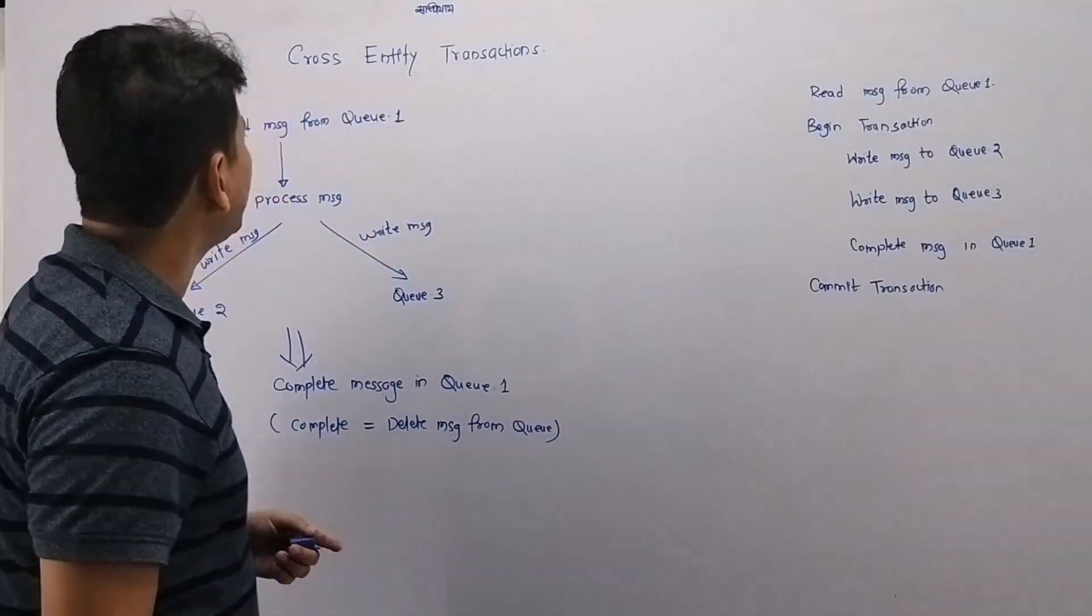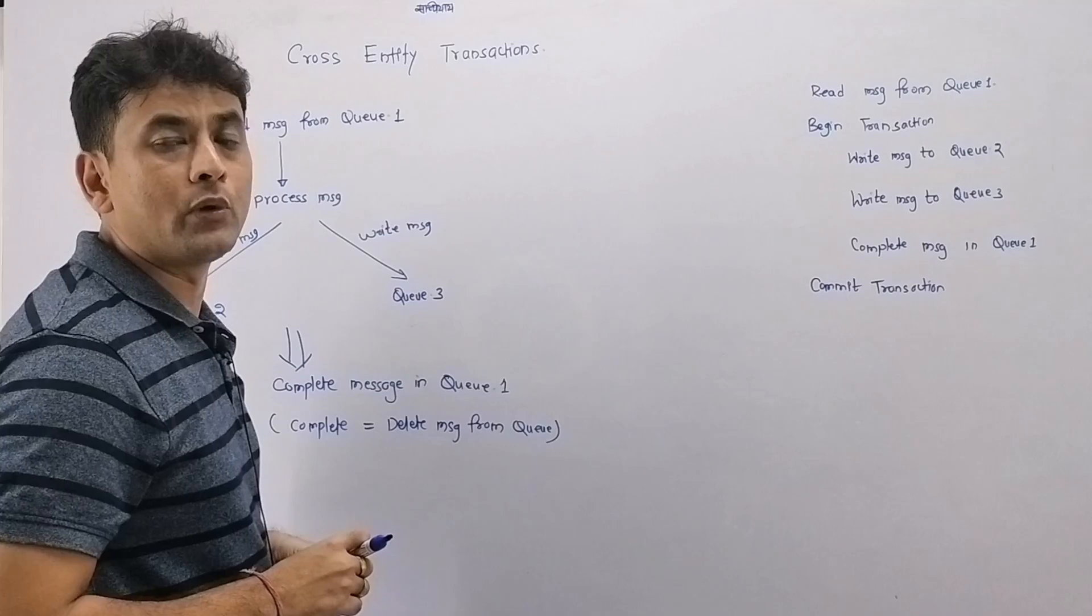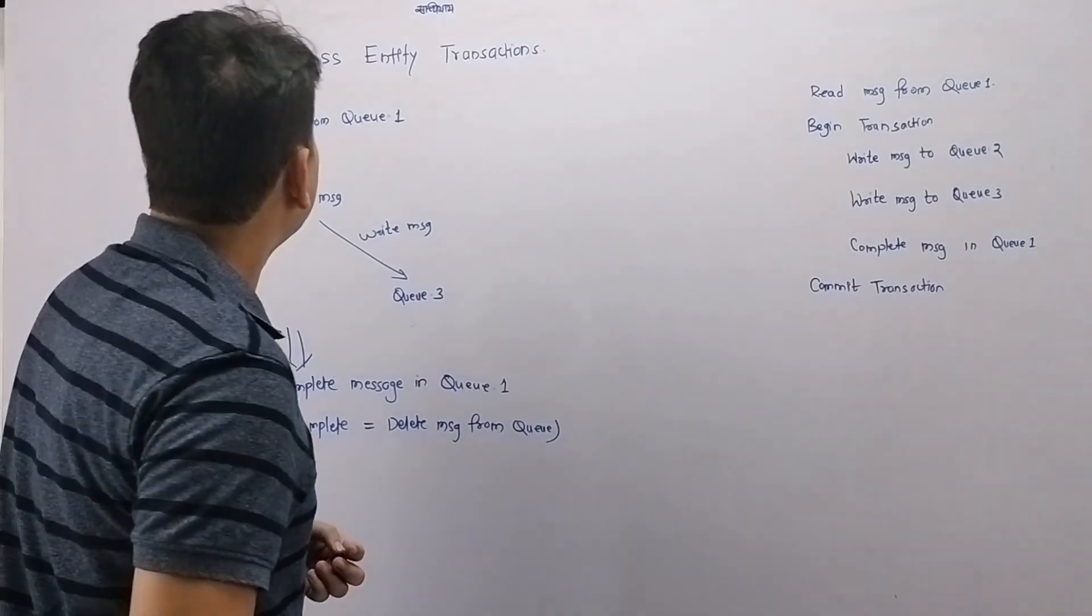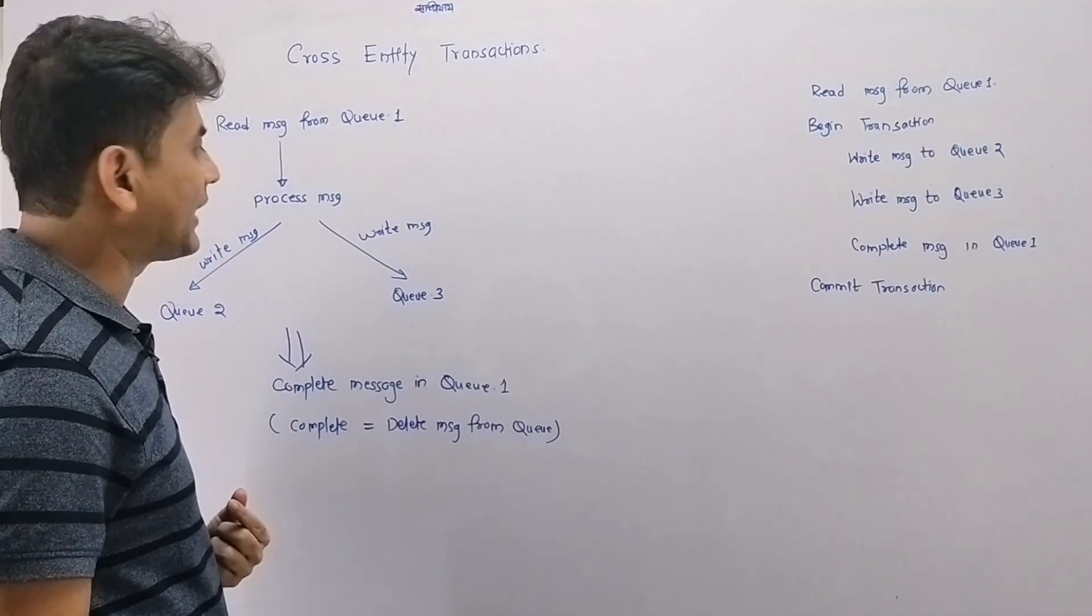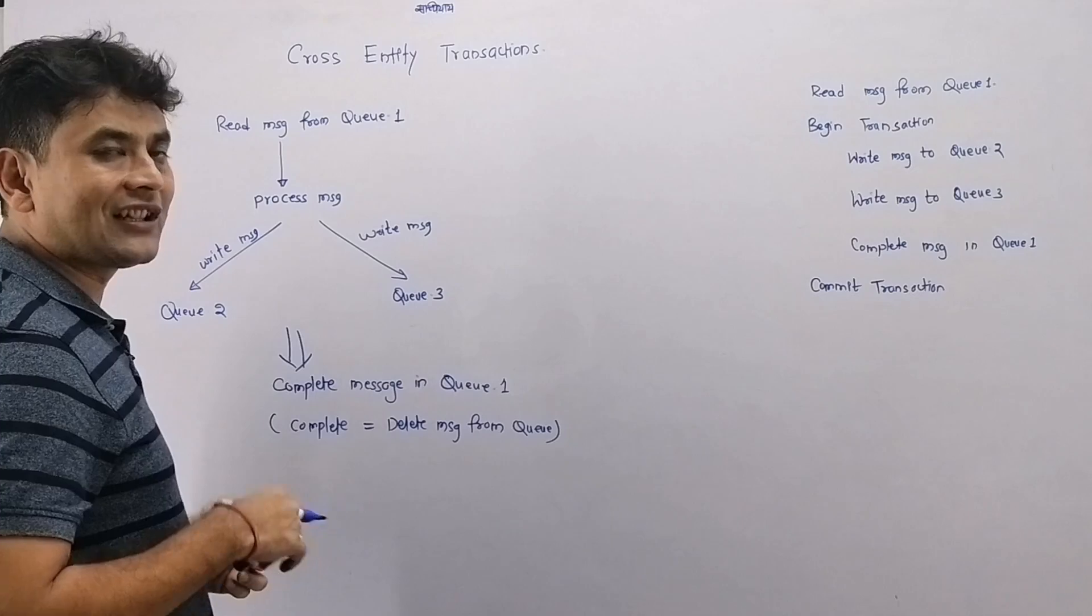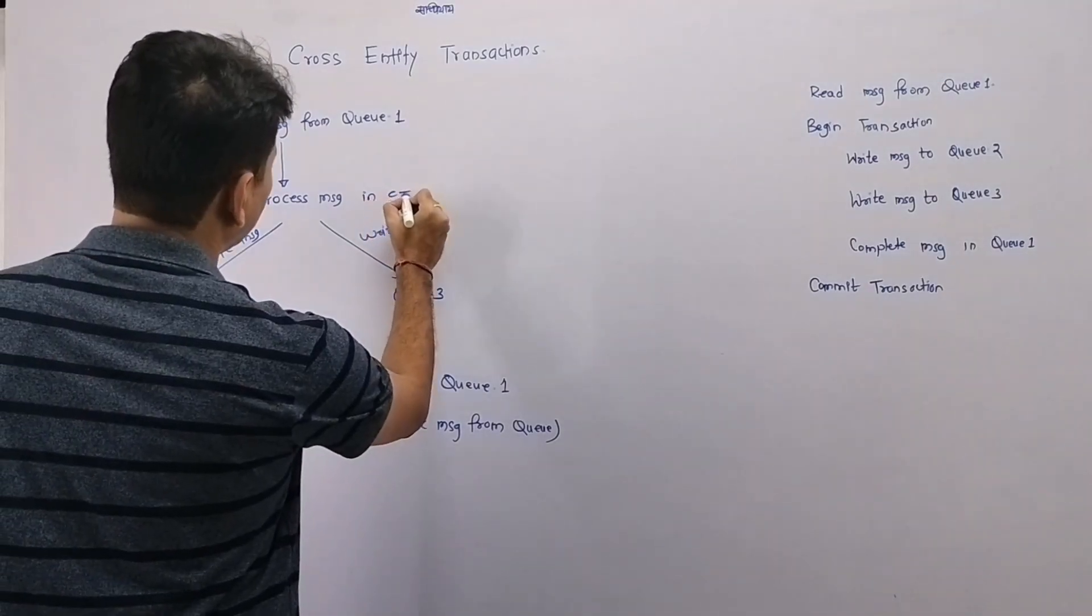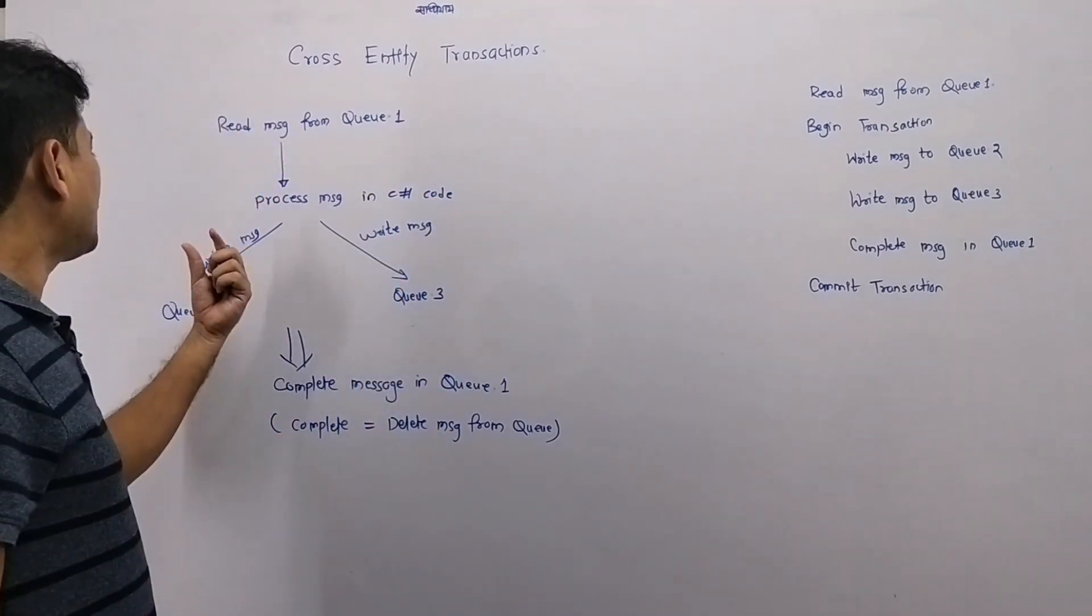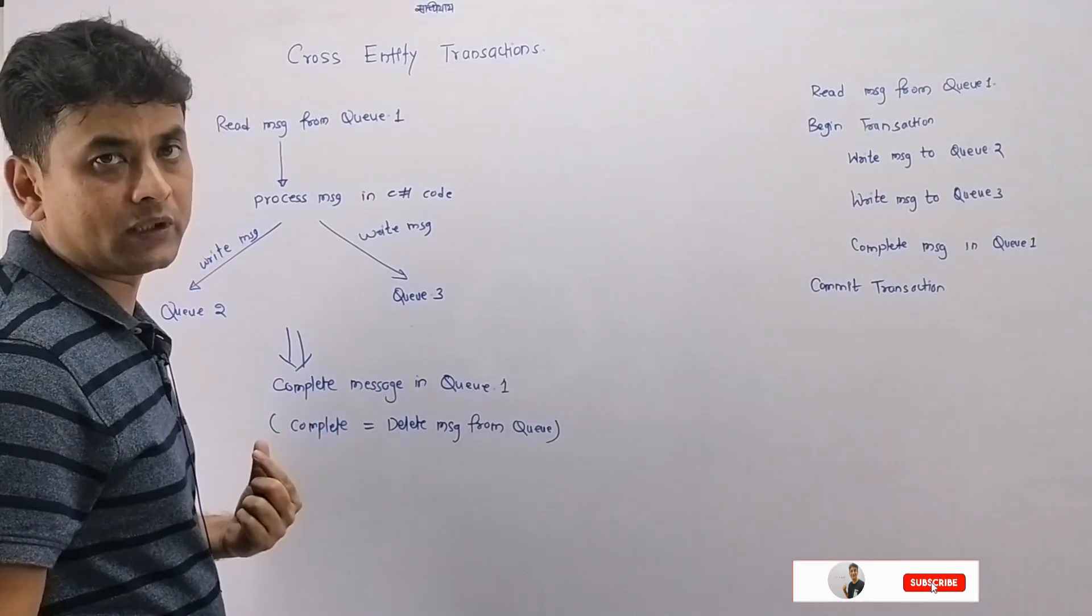Hello guys, in this video we will try to understand cross entity transactions with an example. Imagine you want to read a message from Queue 1, then you want to process that message. You will do certain things on that message in your C# code, then you want to write that message in Queue 2 and Queue 3.